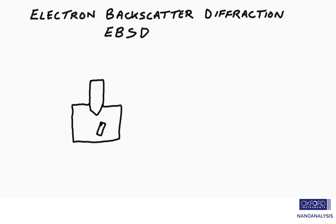Here is an SEM with an electron column and a sample shown in black. The sample needs to be flat and polished for EBSD, and we tilt it up to a high angle from the horizontal, typically 70 degrees.